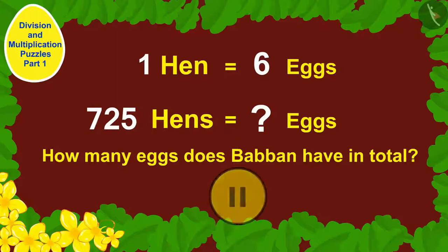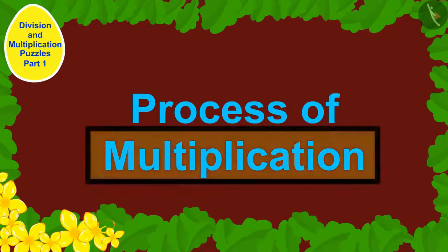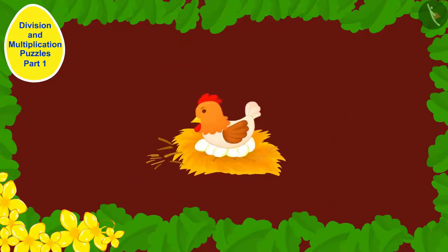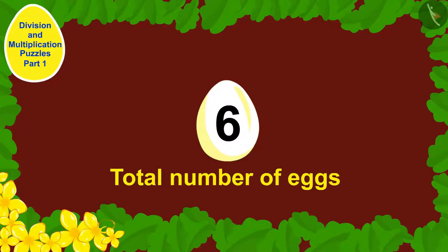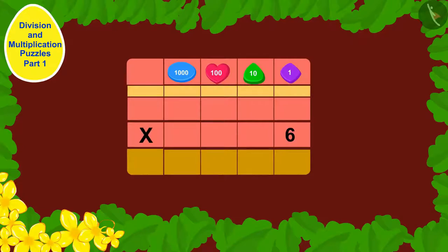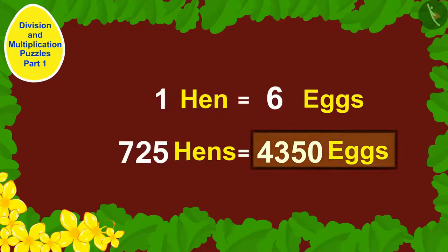If you wish to, you can pause the video and think of the answer. We have to use the process of multiplication to find the total number of eggs. Each hen has laid 6 eggs, so to find the total number of eggs, we will multiply 6 by 725. Babban has a total of 4,350 eggs.